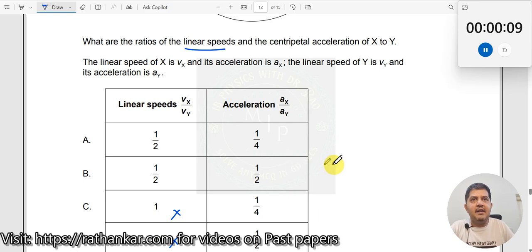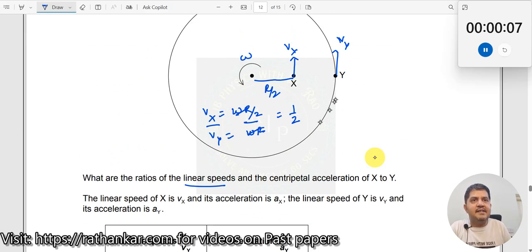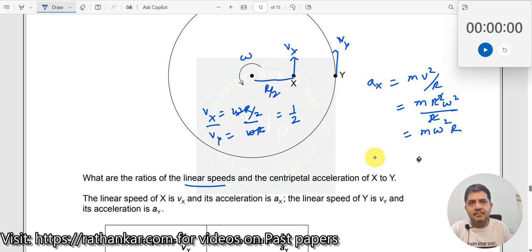Now I want Ax and Ay. Ax is mv²/r, or mvx²/r. But we know v equals r times omega, so this becomes m times r² times omega² divided by r. When r cancels, you get m times omega² times r.